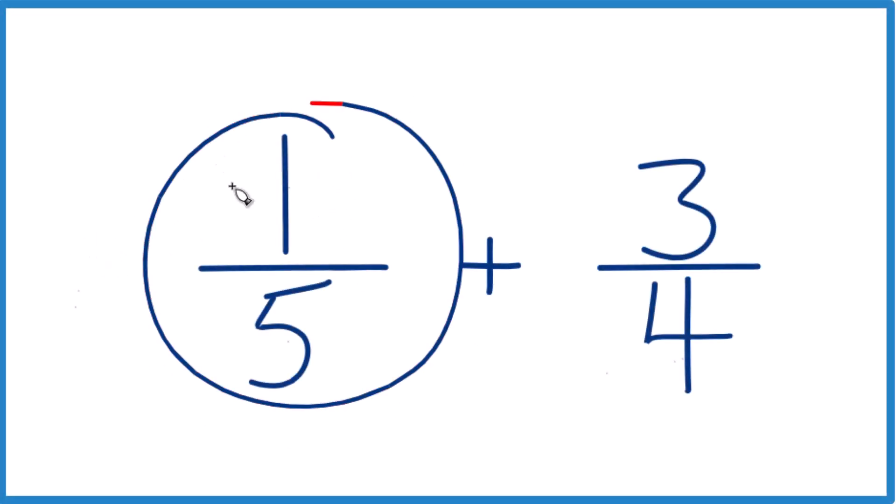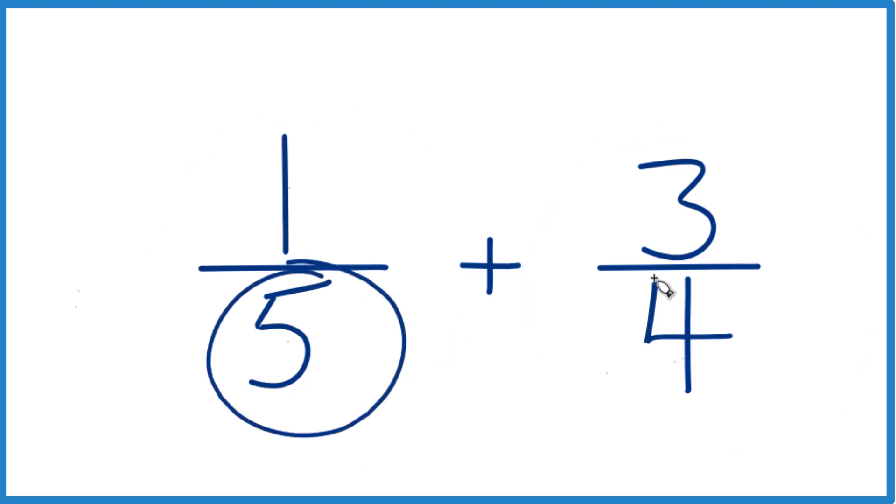Let's take a look at how we can add 1/5 plus 3/4. The key to doing this is we want to have the same denominator, a common denominator, because then we'll keep that the same and just add the numerators to get our answer.